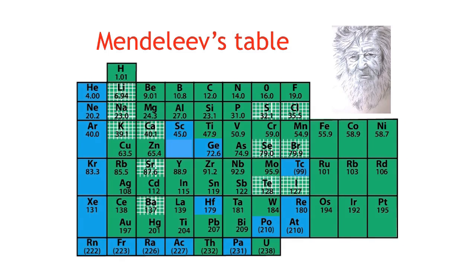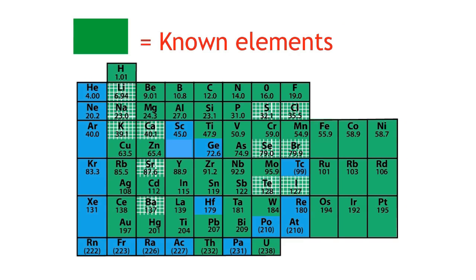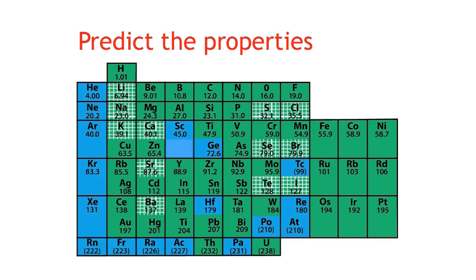He even went as far as to change atomic weights of known elements, so that they would fit into his arrangement. His table allowed him to look at the elements, and from there predict the properties of those missing elements.